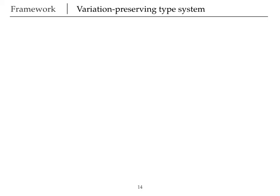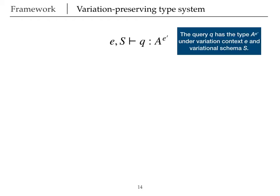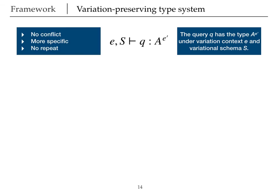We statically type check our queries. And our type system has this judgment form, which you can read as the query Q has the type A tagged with E prime under variation context E and variational schema S. I won't go over the rules, but they make sure that there is no conflict between the variation encoded in our queries and the underlying schema. However, the variation in a query can be more specific than that of the schema. They also give the user the flexibility of not repeating the variation in the schema in their query. A property that is really important for a type system to have is variation preservation.